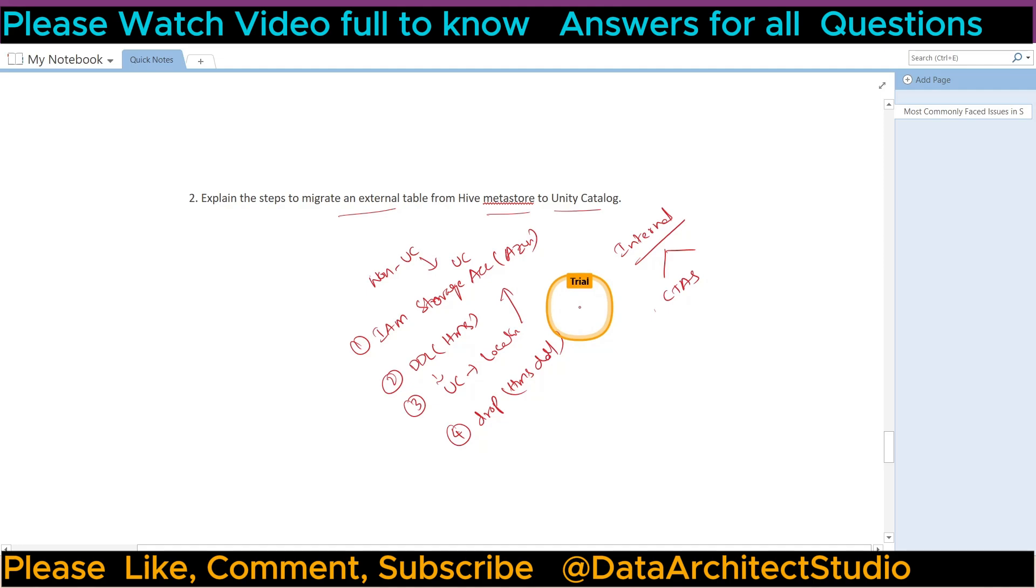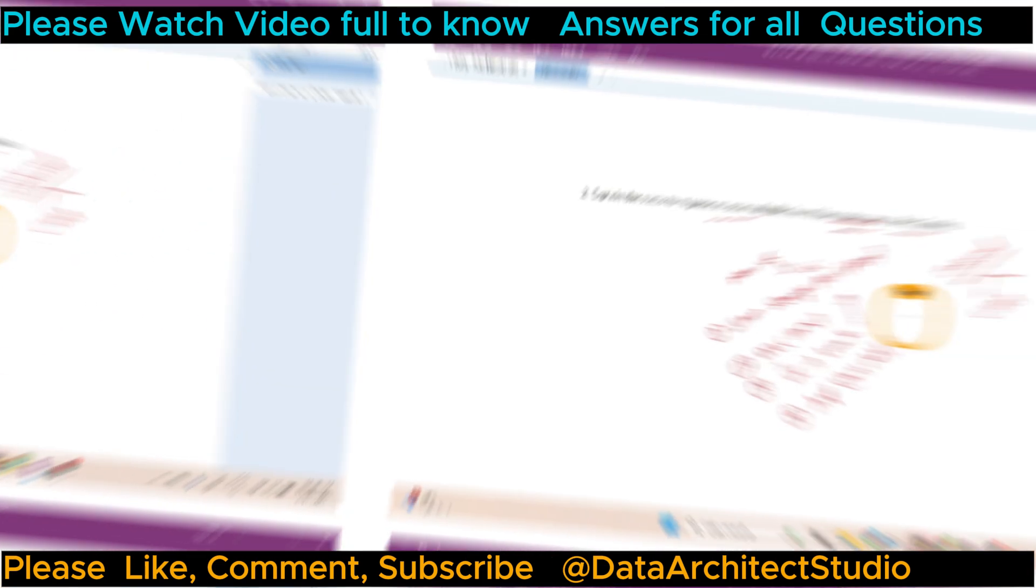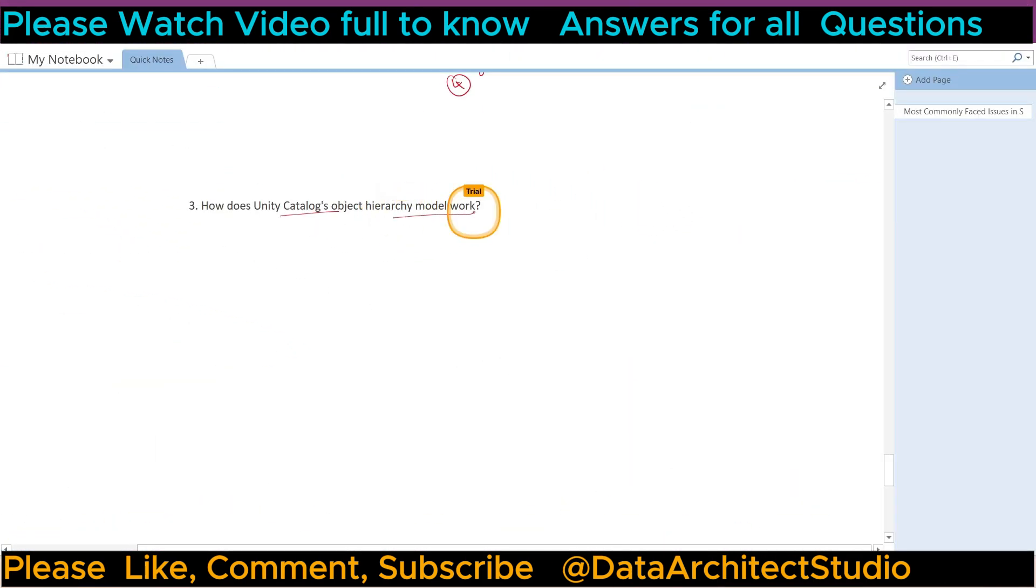Okay, third question is how does Unity Catalog object hierarchy model work? Okay, so first of all we need to understand how the object hierarchy model works. So first we can have a metastore, that's a very high level object. So under this we can have a catalog. Okay, under this we can have schema. Under this we can have tables, views, volumes, and functions. Okay, so these are all the objects that will be available under this.